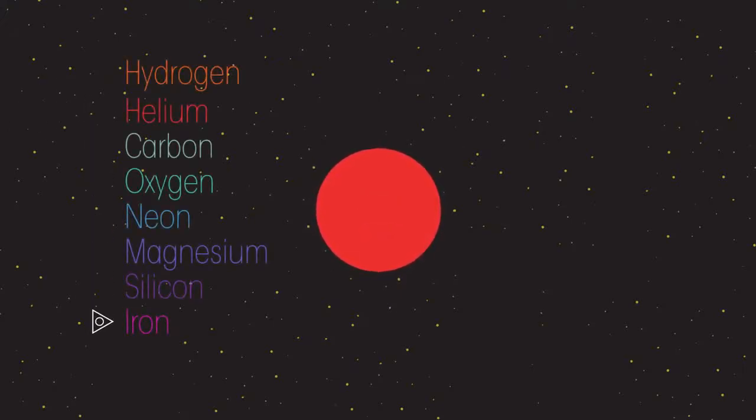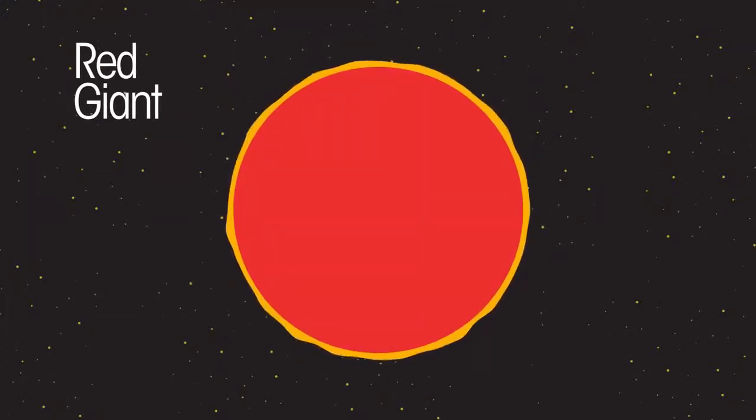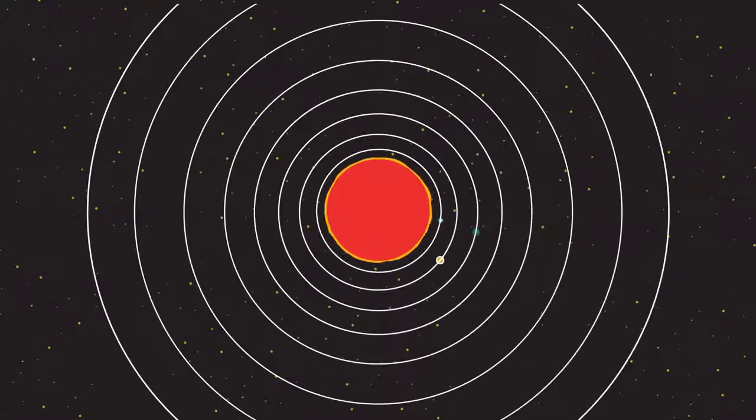To form elements heavier than iron requires an input of energy, which we'll explain a little later. The star now expands and becomes what is called a red giant. When our Sun becomes a red giant, it will expand to such a size as to engulf the three inner planets.